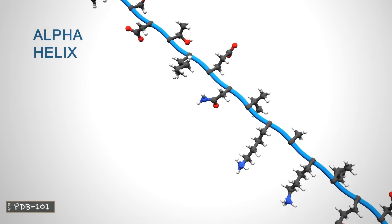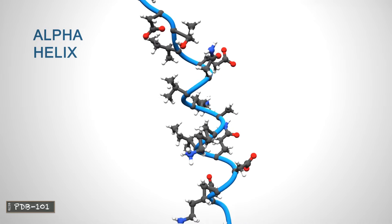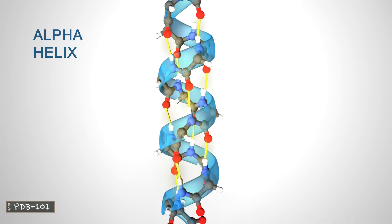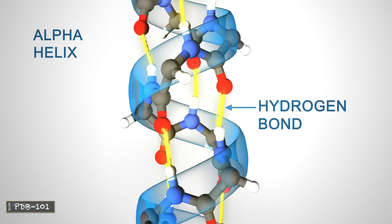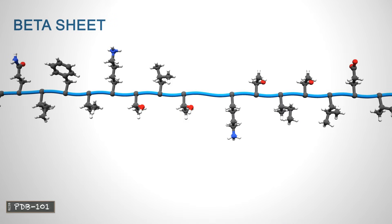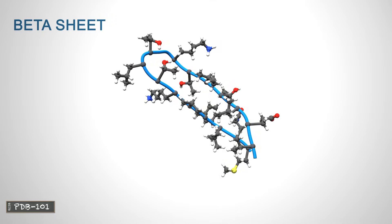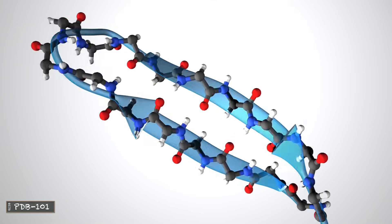An alpha helix is a right-handed coil stabilized by hydrogen bonds between the amine and carboxyl groups of nearby amino acids. Beta sheets are formed when hydrogen bonds stabilize two or more adjacent strands of amino acids.